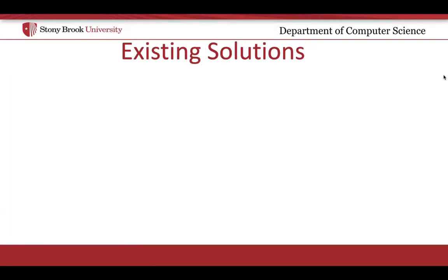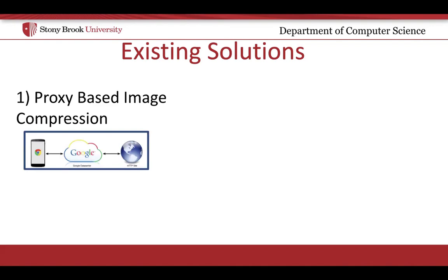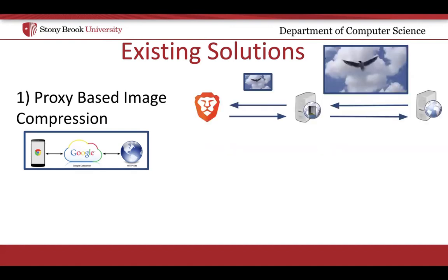There has been quite some effort from the web performance community to improve the data costs of web images, which can essentially be grouped into two categories. The first is proxy-based image compression, as popularized by systems such as Google's Flywheel and Baidu's Traffic Guard. These systems operate on-path using transparent HTTP proxies to save users' data. Web images are often served at resolutions far greater than the size of end-user screens as they browse on smartphones. The result is that these images can be compressed, resized, and transcoded to keep the same perceptual quality on the end-user's device while requiring less data to be sent over the network. Such on-path proxies intercept the image data, applying such transformations on the fly without developer effort, saving users' data costs before the image is transmitted over the last-mile cellular link.